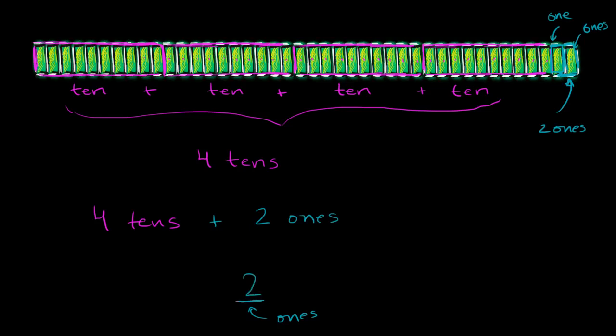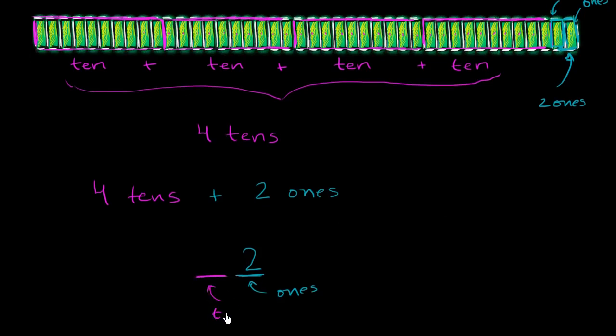And then the next place over to the left, that's where we say how many tens we have. That's where we say how many tens we have. And we know how many tens we have. We have 4 tens. So the way that we would represent this in our number system is we would say that this is 4 tens and 2 ones. And we call this, right over here, we call this 42.